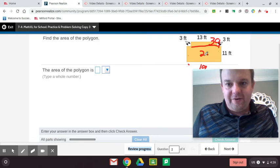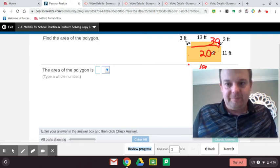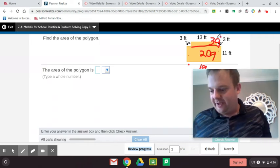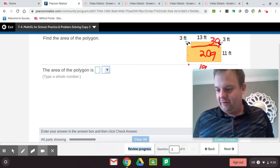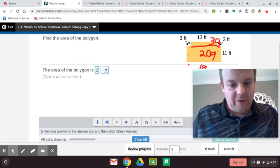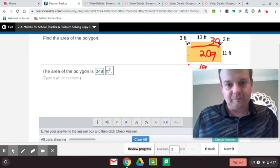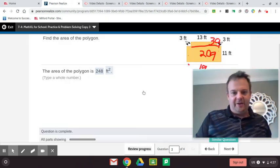So 209 right here. So 209 plus 39. And that equals 209 plus 39 equals 248. So 248 feet squared. We did it. We did it guys.